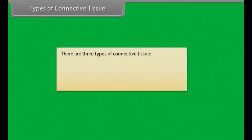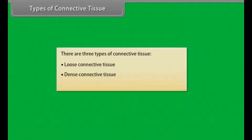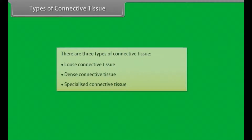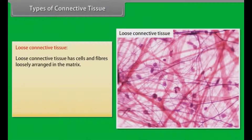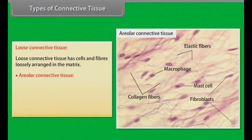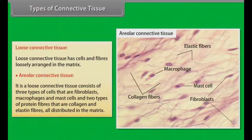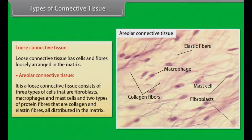There are three types of connective tissue: loose connective tissue, dense connective tissue, and specialized connective tissue. Loose connective tissue has cells and fibers loosely arranged in the matrix. Areolar connective tissue consists of three types of cells — fibroblasts, macrophages, and mast cells — and two types of protein fibers — collagen and elastin fibers — all distributed in the matrix.